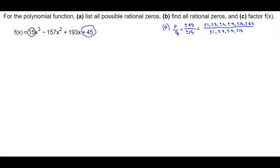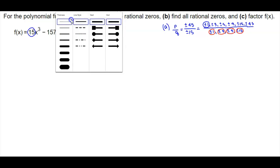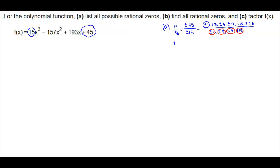We need to first take the numerator 1 and divide it by each value in the denominator. So we have plus or minus 1 divided by plus or minus 1, plus or minus 1 divided by plus or minus 3, plus or minus 1 divided by plus or minus 5, and plus or minus 1 divided by plus or minus 15.